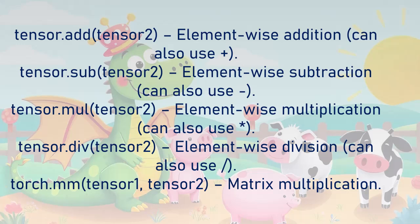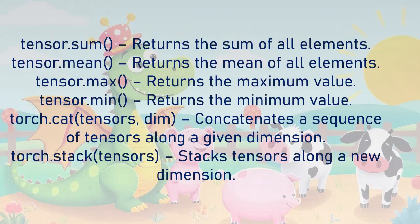torch.matmul performs matrix multiplication. torch.sum returns the sum of all elements. torch.mean returns the mean of all elements. torch.max returns the maximum value. torch.min returns the minimum value.